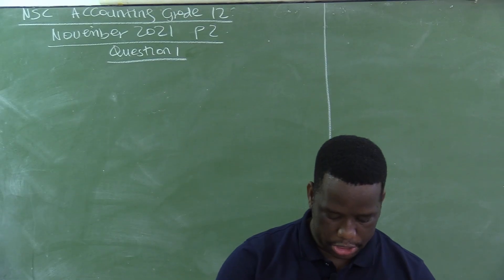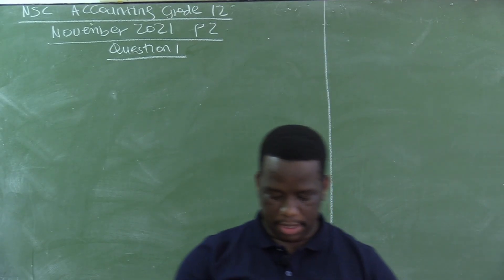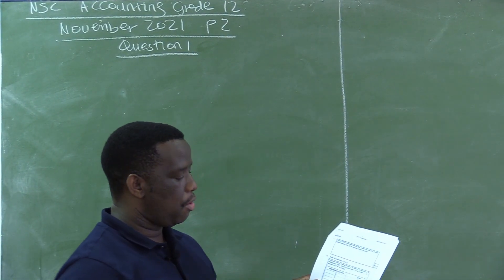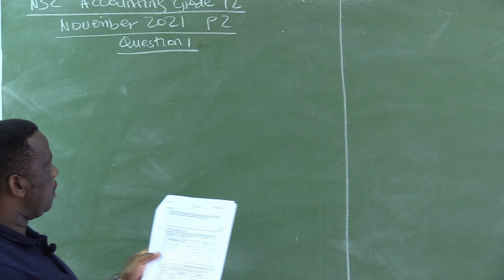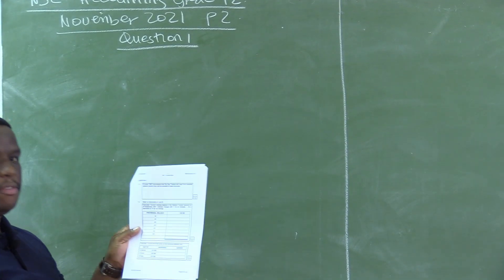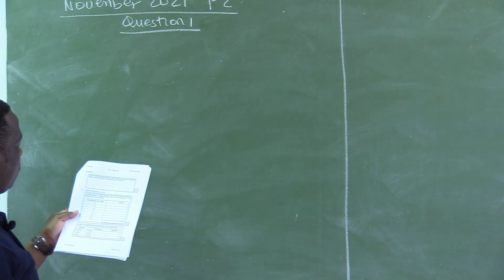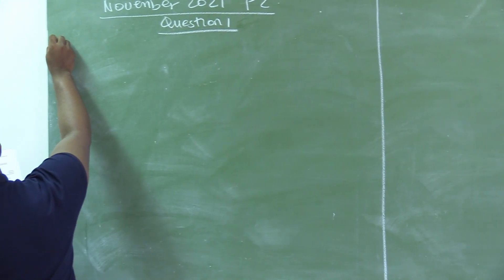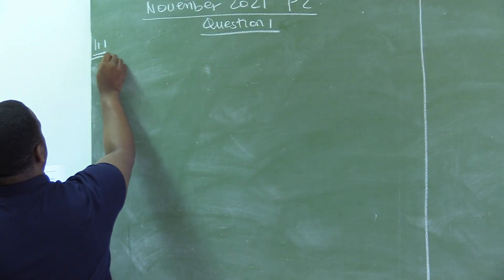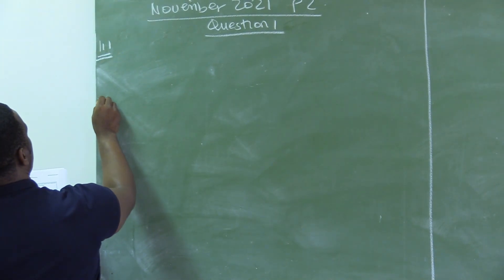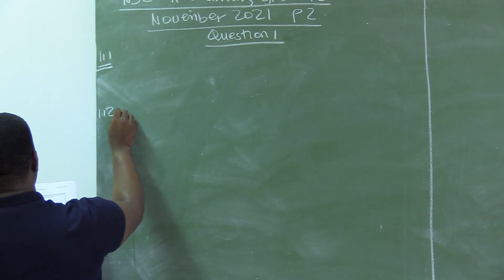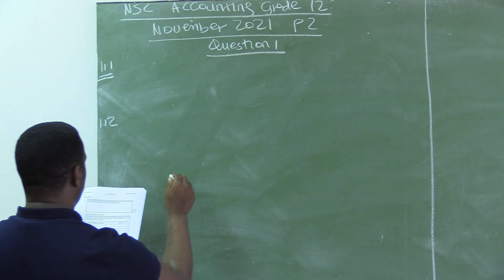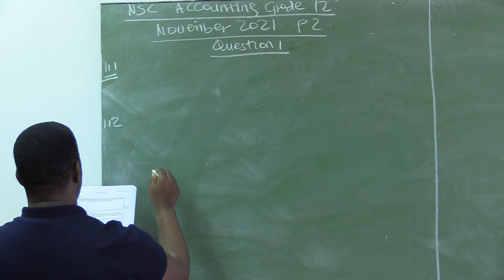Before we get to the question paper, let me take the answer sheet so that I can draw a few things which were given in the answer sheet on the board. So you have question 1, and there is 1.1 and there is also 1.2, and there is a table in 1.2 which was given.